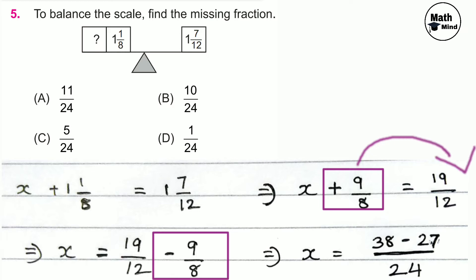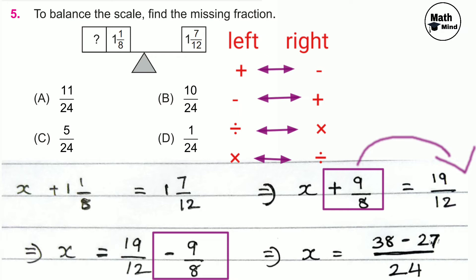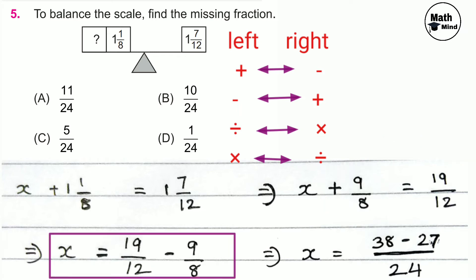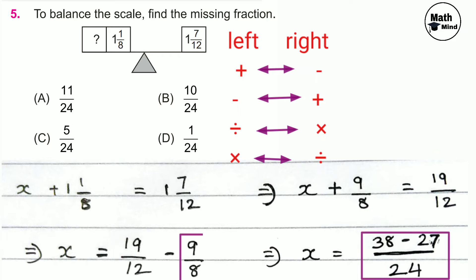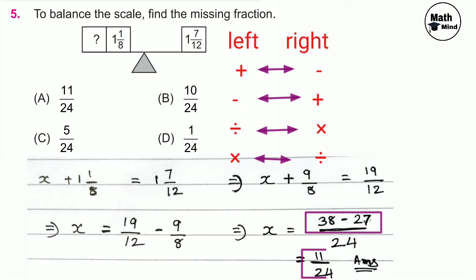When transferring a number from one side to the other, if it is added on the left it is subtracted on the right, and similarly for other operations. So x equals 19/12 minus 9/8. Taking the common denominator 24: 19/12 equals 38/24, and 9/8 equals 27/24. 38 minus 27 equals 11, so x equals 11/24. Option A is correct.